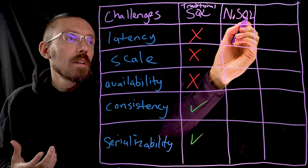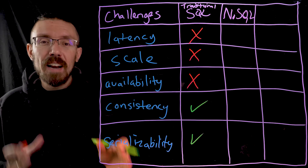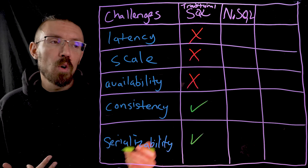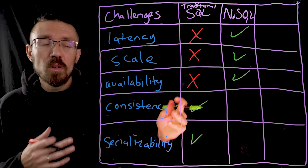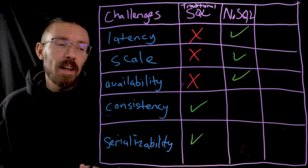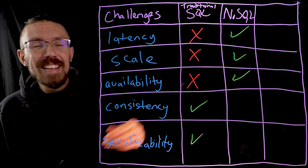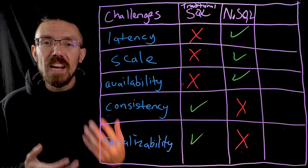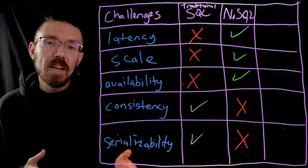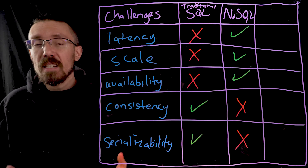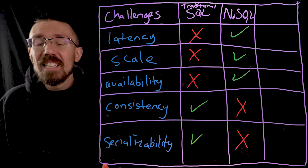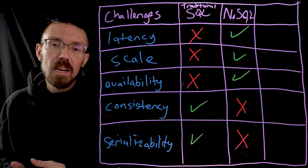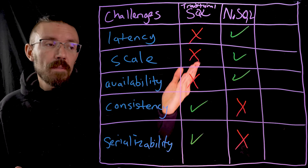The next option is the NoSQL database. There are a lot of different NoSQL databases with different features, but in general they are built to scale and many are built to be distributed — they're kind of built for the more modern world we're now living in. So we can get some of those check marks around latency, scale, and availability. The problem is that while we've added those advantages, we've also added disadvantages. A NoSQL database is not a relational database — you don't have a schema to enforce data validity and rules the same way, which adds extra work if you're trying to meet the consistency and serializability requirements.